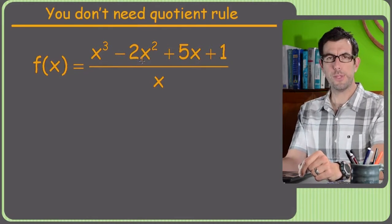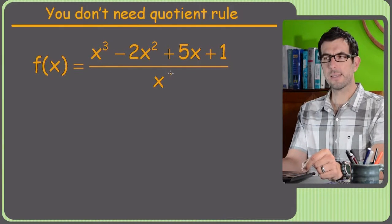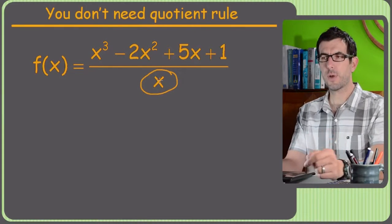Alright, so why don't we need the quotient rule on this puppy? Well, this is a special case because I have the power of x downstairs and it's just x. It's not like x plus 1 or x squared minus 6 or anything.